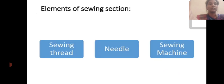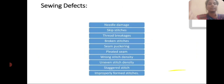Elements of sewing section: sewing thread, needle, sewing machine. Sewing defects include: needle damage, thread drawbacks, broken stitches, seam puckering, pleated seam, wrong stitch density, uneven stitch density, and improper format stitching.